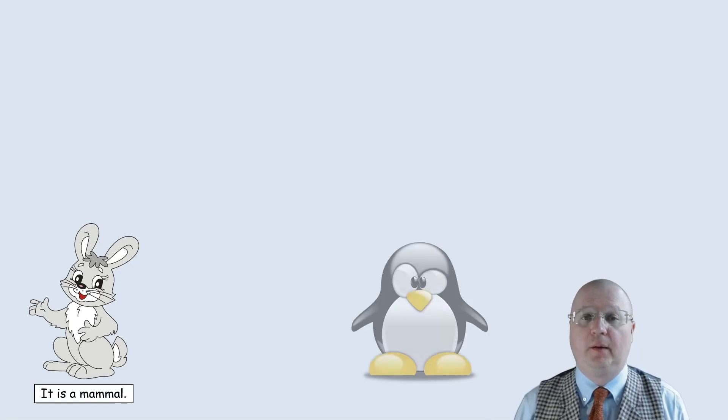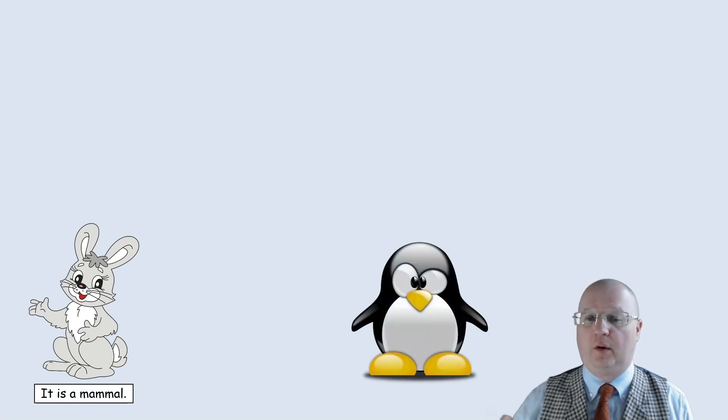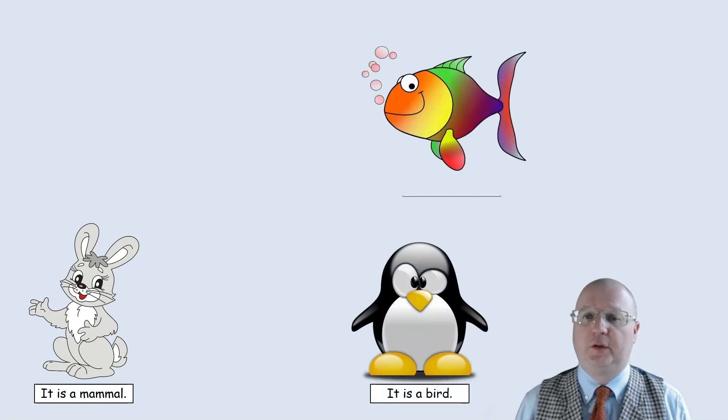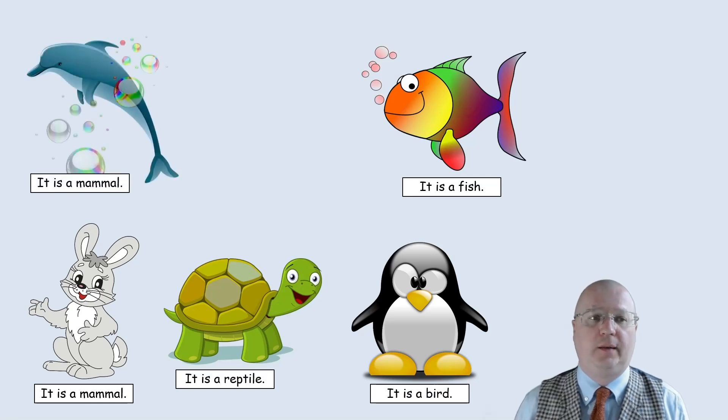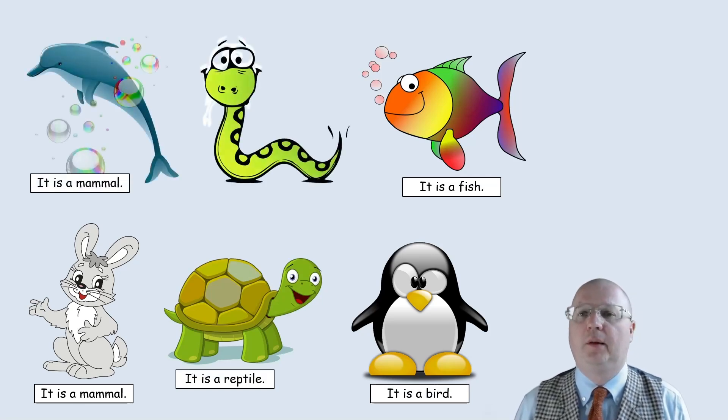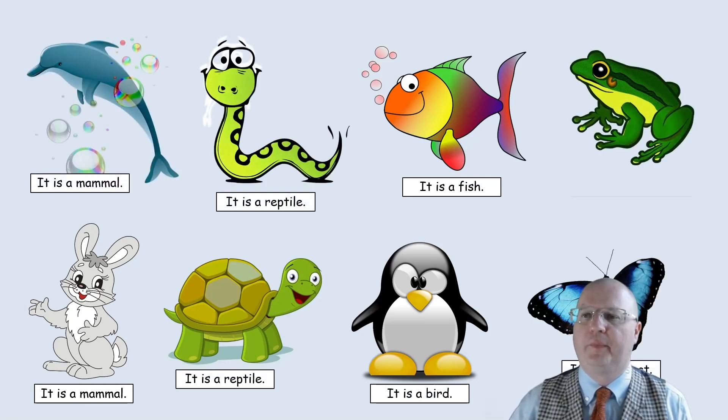Here's the activity. You show a picture of an animal and your students need to tell you which animal group it belongs to. So in this case it is a mammal, or it is a bird, it is a fish, it is a reptile, it is a mammal, and so on.